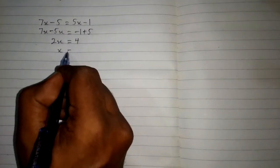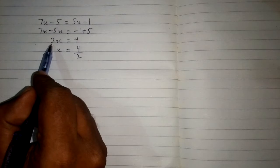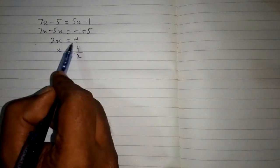Now we can divide 4 by 2 because we can see that 2 is multiplying on this side. So when we take 2 on the other side, this 2 will divide 4.